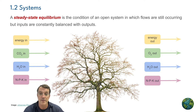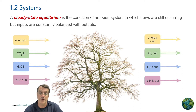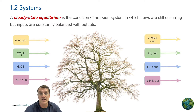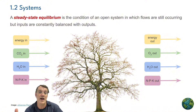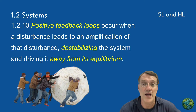In a forest ecosystem, the balance of carbon dioxide uptake through photosynthesis and release through respiration demonstrates a steady state equilibrium. There are different times of day or different seasons when the CO2 intake and CO2 output may change, but overall it's a stable state equilibrium.